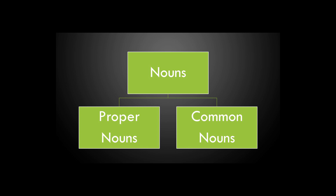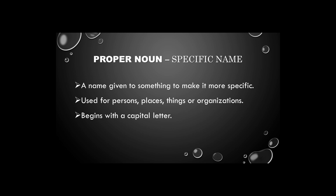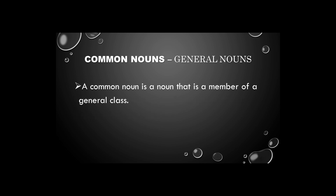A proper noun is the name given to something to make it more specific. It is a special word that we use for a person, place, thing, or an organization. Proper nouns always begin with a capital letter in English, no matter where they fall in a sentence. The best example of a proper noun is your name.